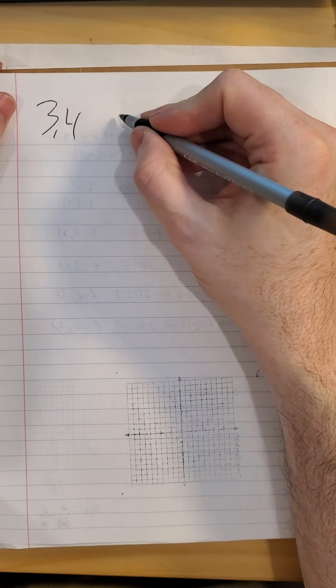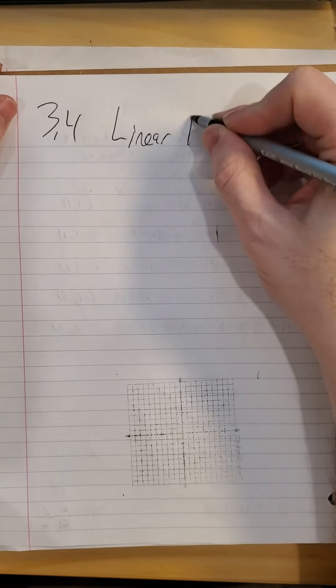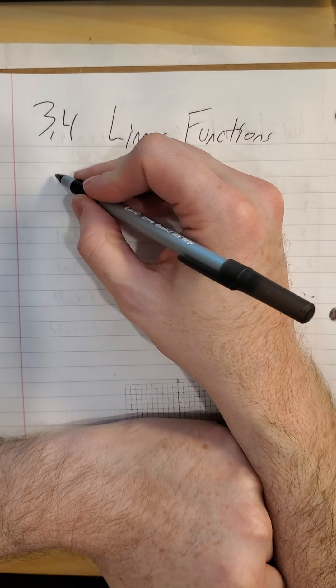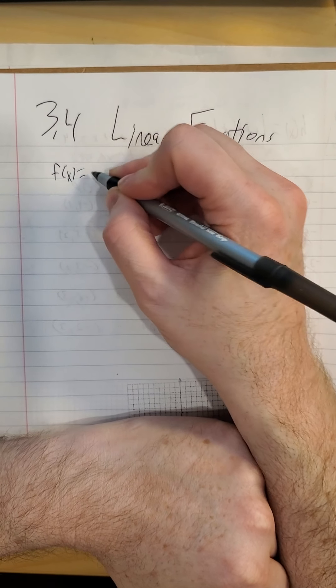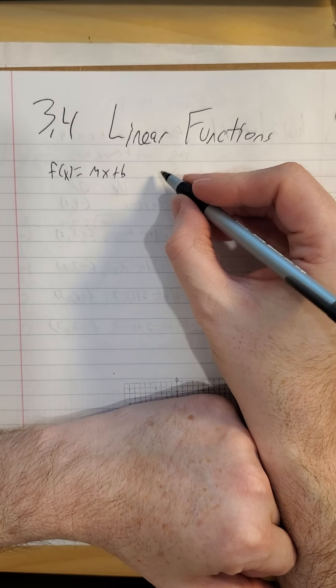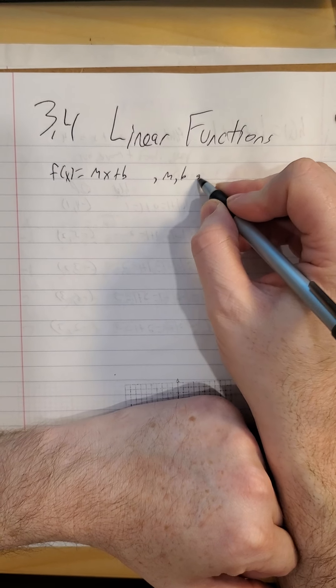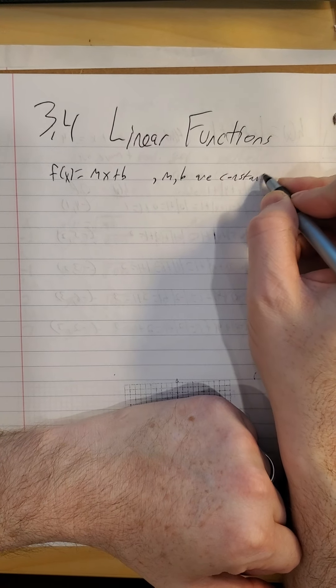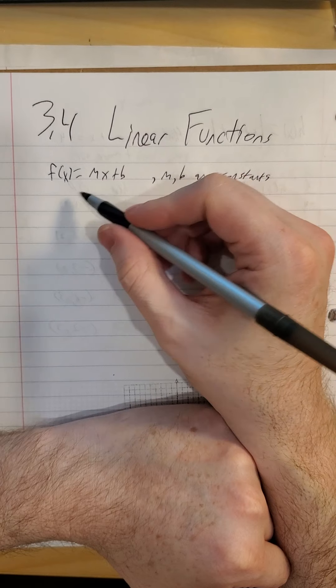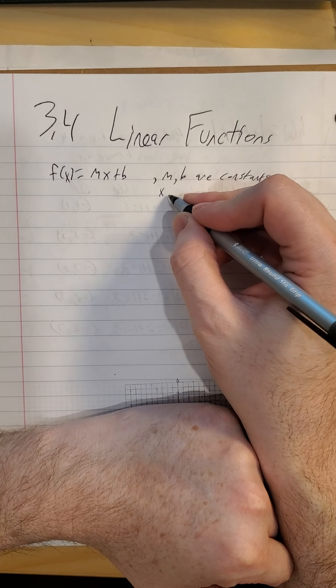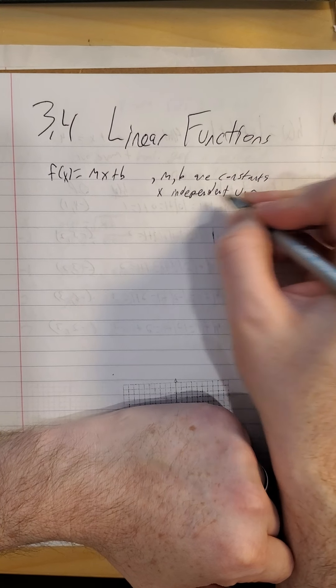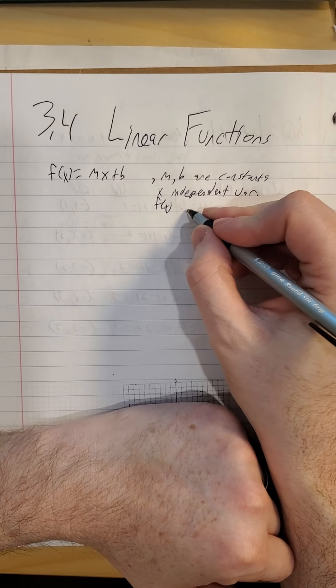Hello and welcome back. In section 3-4 we explore linear functions. So first what we mean by a linear function. We have to have the ability to get it to this form, so here M and B are constant. So x and f of x are variables of course, x is your independent variable, f of x is a dependent variable.